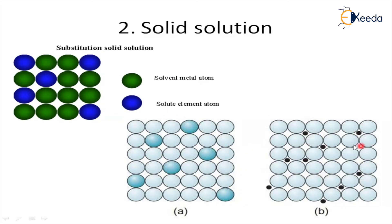Now consider the interstitial solid solution. In this type, the foreign atom occupies the void space — the space between two atoms — instead of the original atomic position. Whatever void space is available between atoms, the foreign material occupies that space. If this is the case, then we say it is an interstitial solid solution.